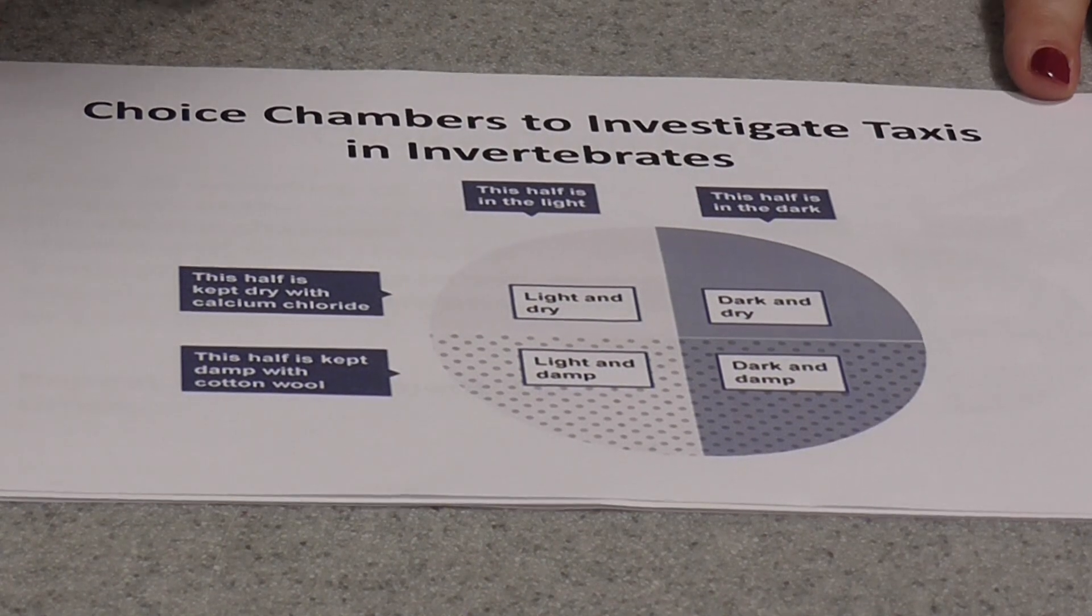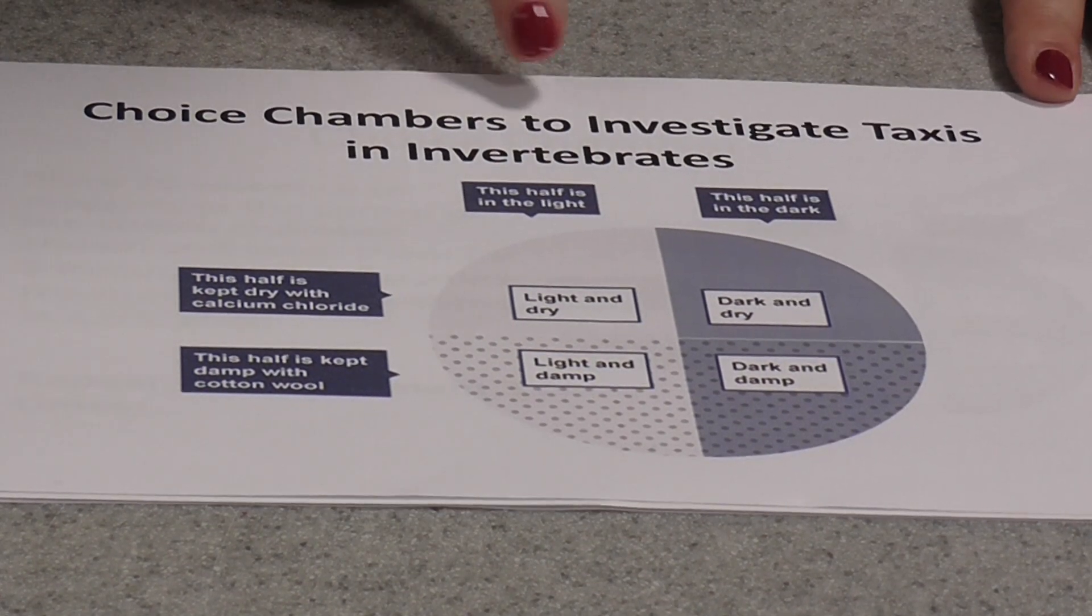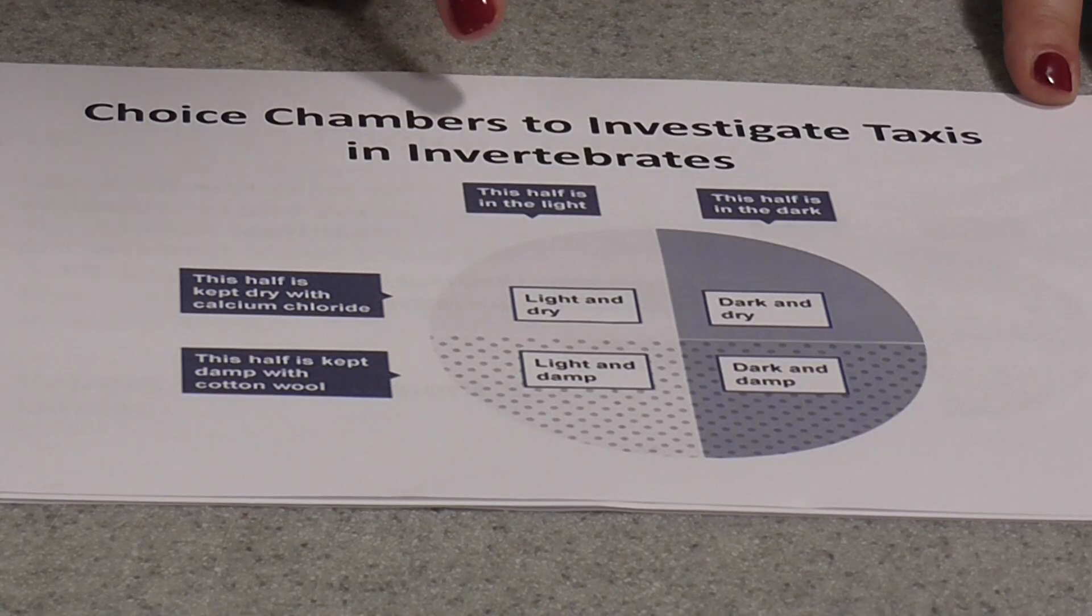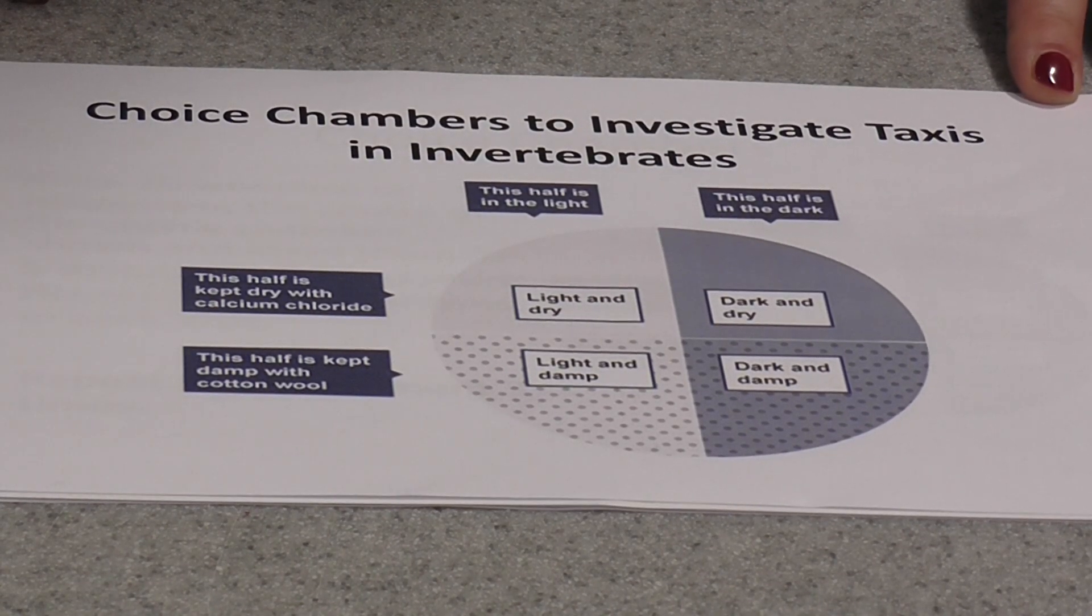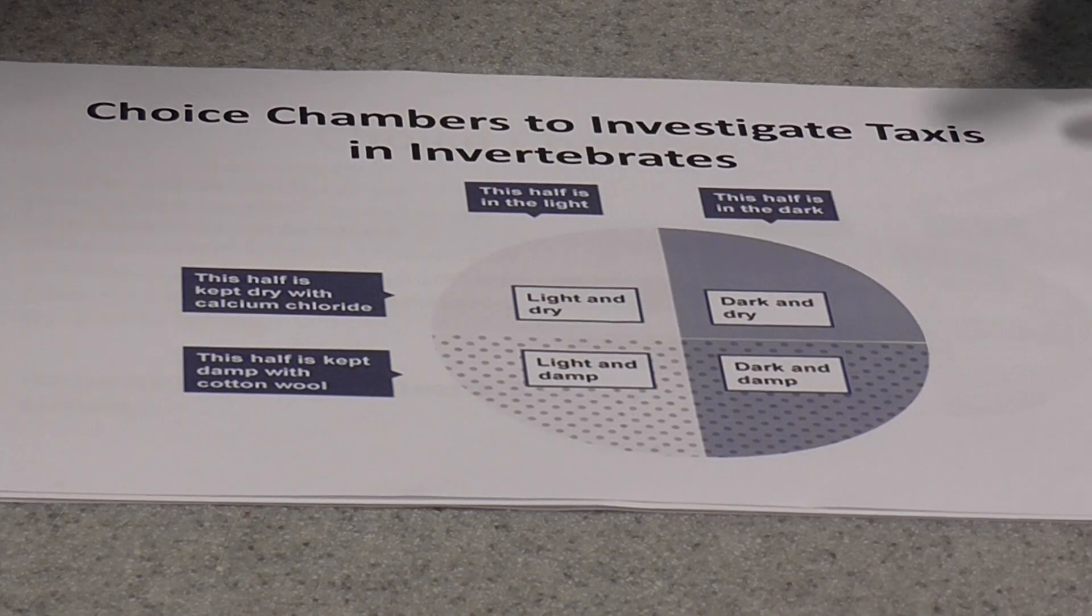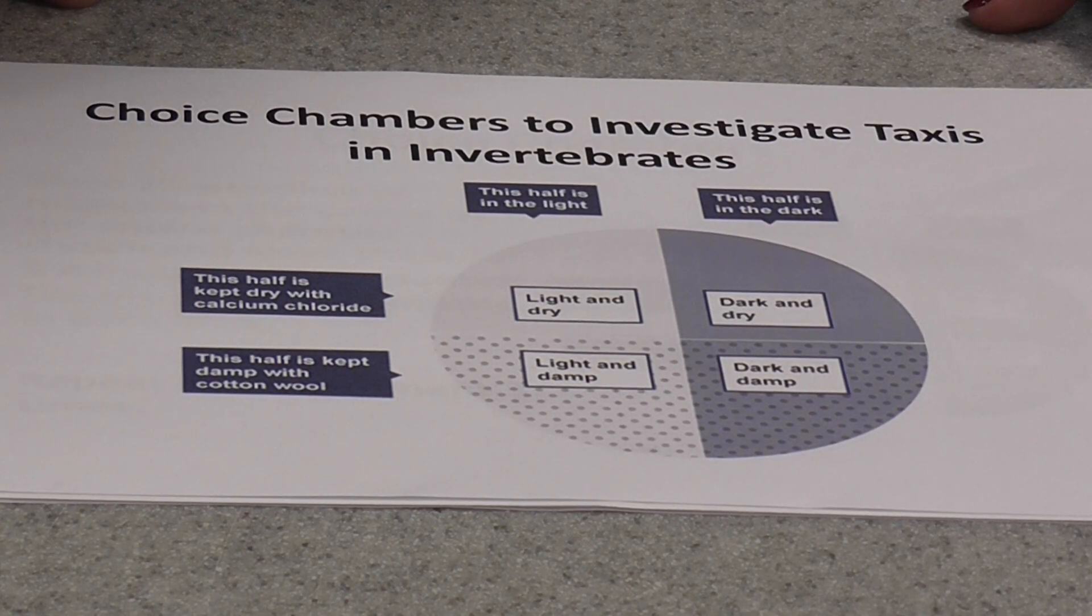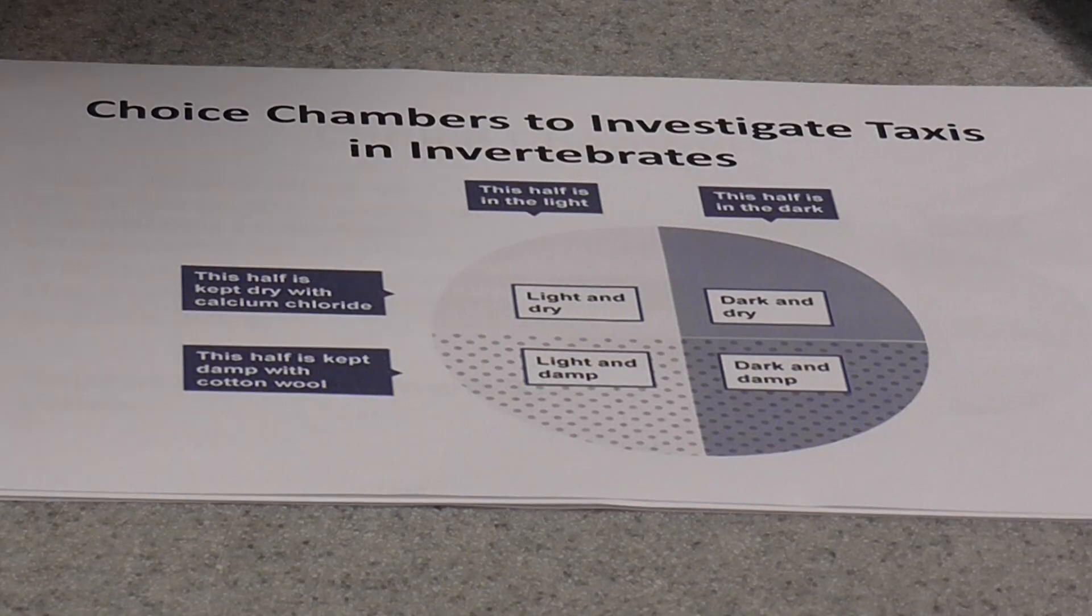I'm going to show you how to use something called choice chambers to investigate a simple animal response called taxis in invertebrates. The best invertebrates to use for this are maggots from the local fishing tackle shop or you can go out and collect wood lice.